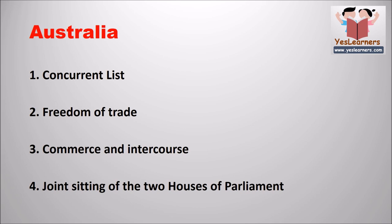The provisions taken from the Constitution of Australia are Concurrent List, Freedom of Trade, Commerce and Intercourse, and the Joint Sitting of the Two Houses of Parliament.